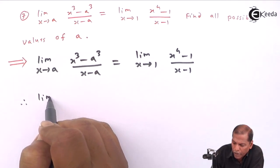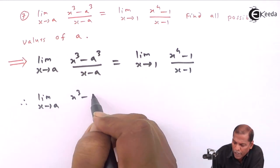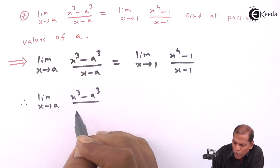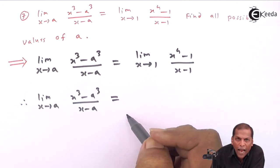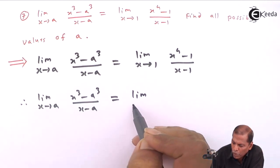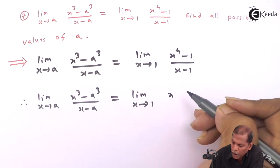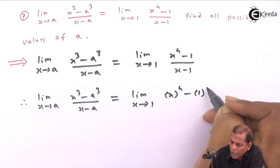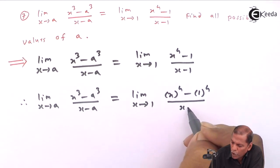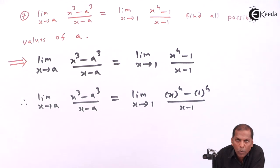Therefore, the next step will be limit x tends to a of x cubed minus a cubed upon x minus a, we write as it is, is equal to limit x tends to 1. This we write as x to the power 4 minus 1 can be written as 1 to the power 4 upon x minus 1.